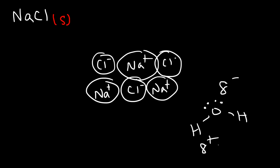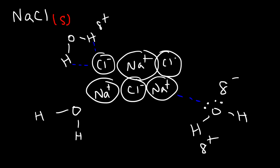A lot of salts like sodium chloride and other compounds tend to dissolve in polar solvents. The oxygen part of water is attracted to sodium — opposites attract: sodium has a positive charge and oxygen has a partial negative charge. The hydrogen part of water, which has a partial positive charge, is attracted to the negatively charged chlorine atom. So all of these water molecules are slowly pulling each ion in the crystal away from each other.